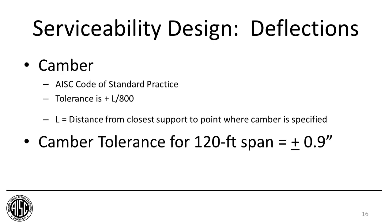A note about camber with respect to trusses: the standard tolerance according to the code of standard practice for a truss is L over 800, where L is measured from the distance to the closest support to the point where camber is specified. For that 120-foot truss example, the tolerance on the camber is nearly plus or minus one inch. So when specifying camber, you need to understand that something may come out cambered one inch more or less than assumed, and understand what that means for the end result of your structure.